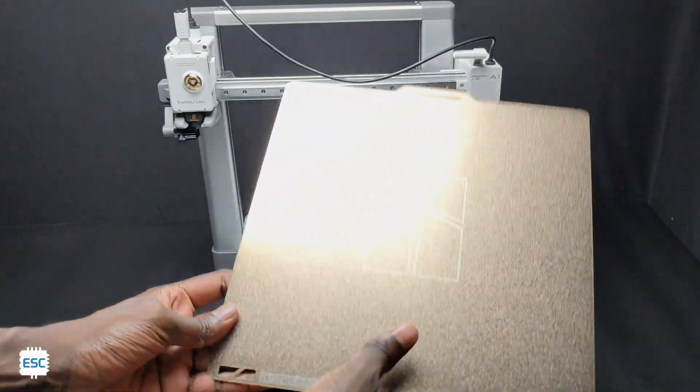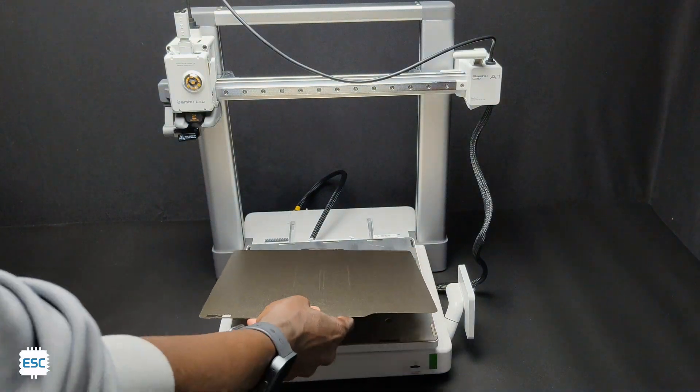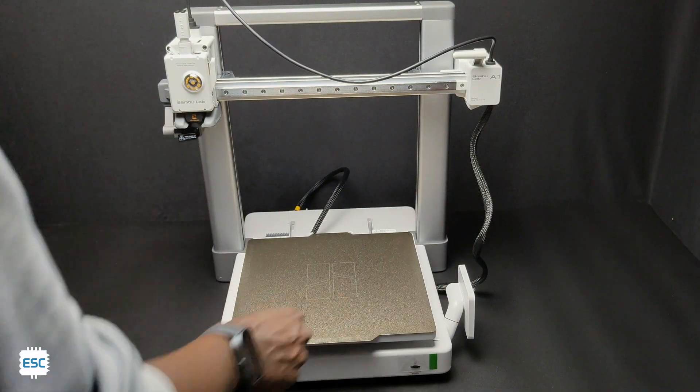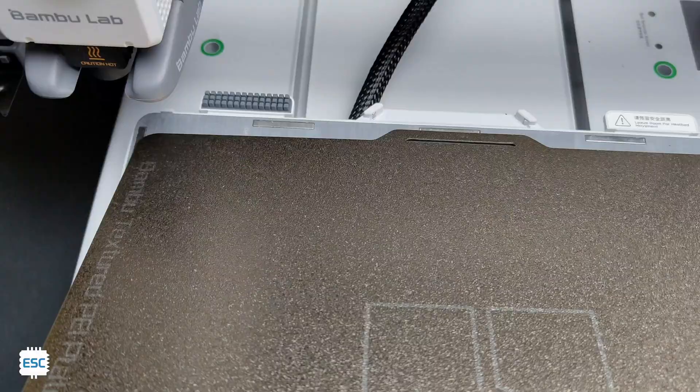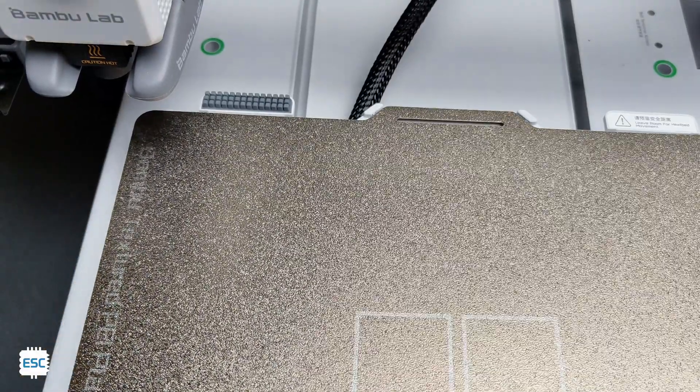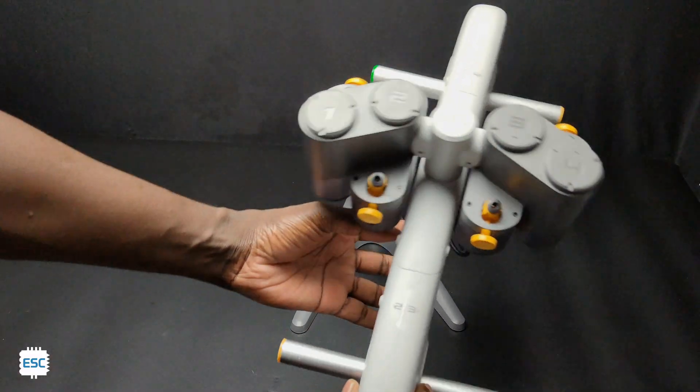The printer comes with a two-sided textured PEI sheet which easily sticks with the magnetic bed. The A1 comes with a small guider bracket on the back side of the bed which will help to position the PEI sheet correctly on the bed. This bed can reach up to 100 degrees Celsius. Before turning on the printer, let's set up the AMS also.